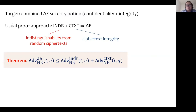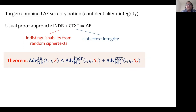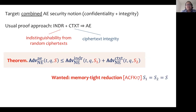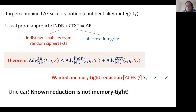The question, however, is how does this result look when we take memory into account? Ideally, we want a memory-tight reduction — that is, we want S1 and S2 to be very close to S. Unfortunately, the known reduction is not memory-tight. Let's see why.